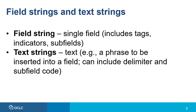We'll first take a look at field strings and text strings. Field strings consist of a single field that includes the tag, the indicators, and the subfields, and all the data in the subfields. Text strings include just text — for example, a phrase to be inserted into a field. They cannot include tags and indicators; however, you can include a delimiter symbol and a subfield code.